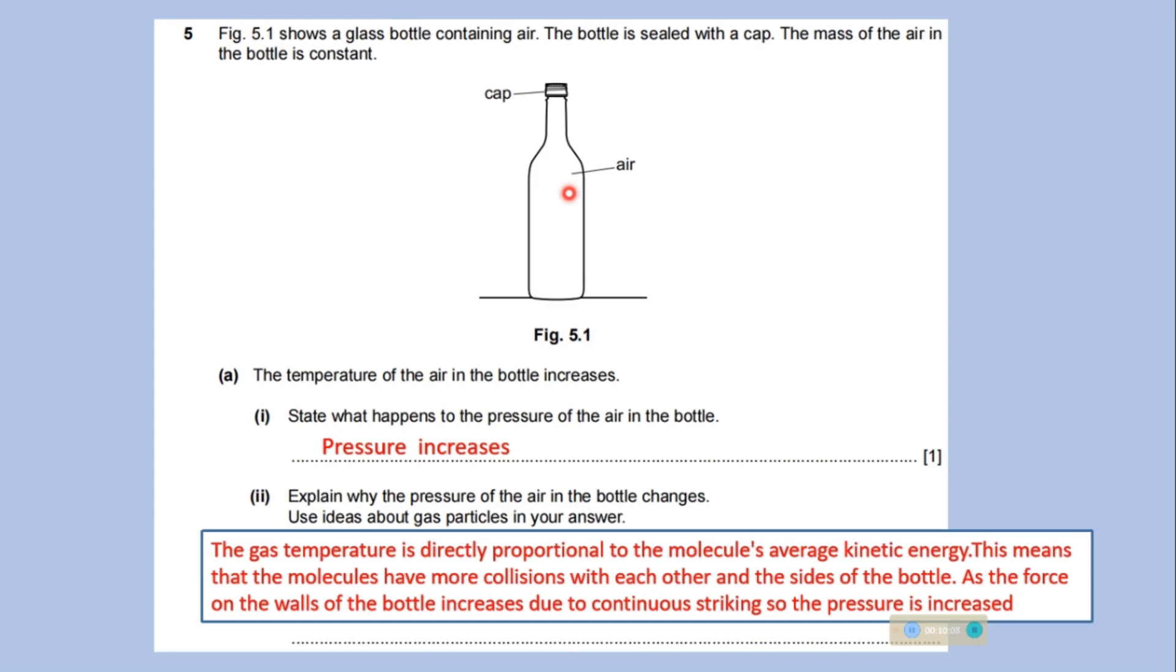This figure shows a glass bottle containing air. The bottle is sealed with a cap. The mass of the air in the bottle is constant. The temperature of the air in the bottle increases. State what happens to the pressure of the air in the bottle. So, the pressure will increase.